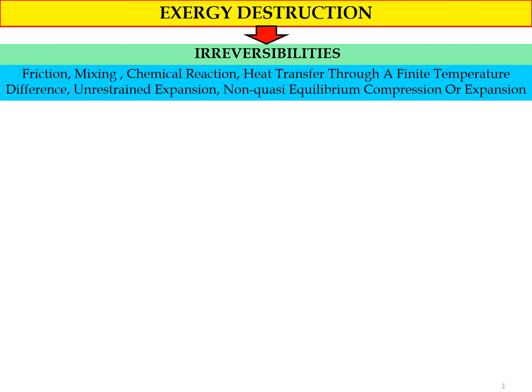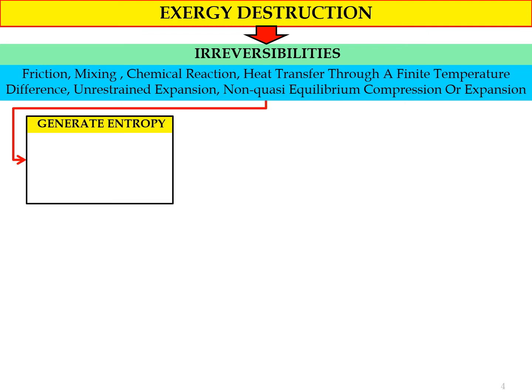Irreversibility comes from friction, missing chemical reaction, heat transfer through a finite temperature difference, unrestrained expansion, non-quasi-equilibrium compression, or non-quasi-equilibrium expansion. Basically, irreversibility represents the losses of the system.